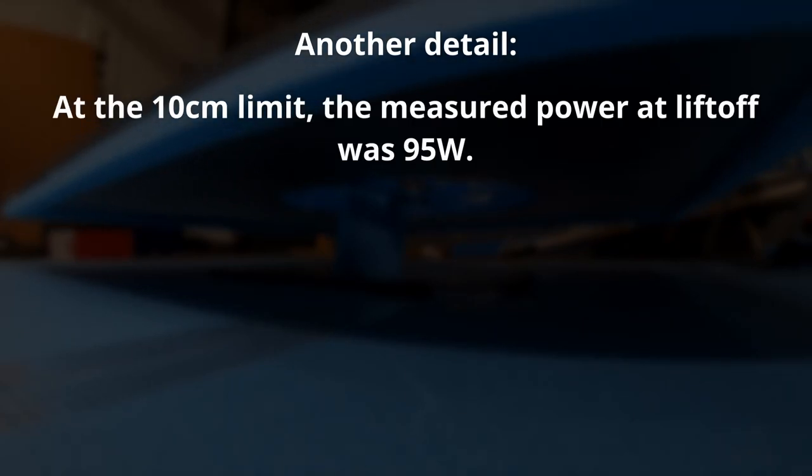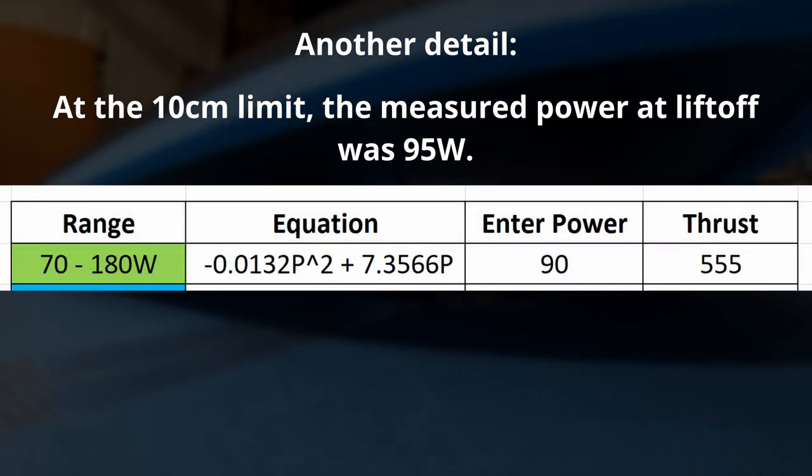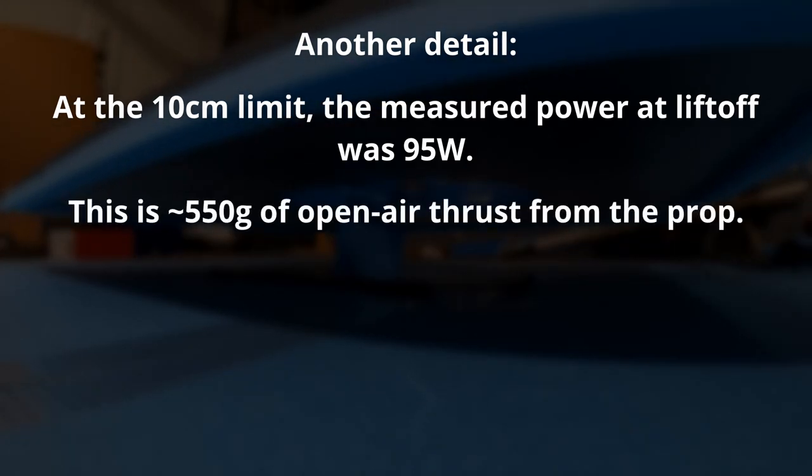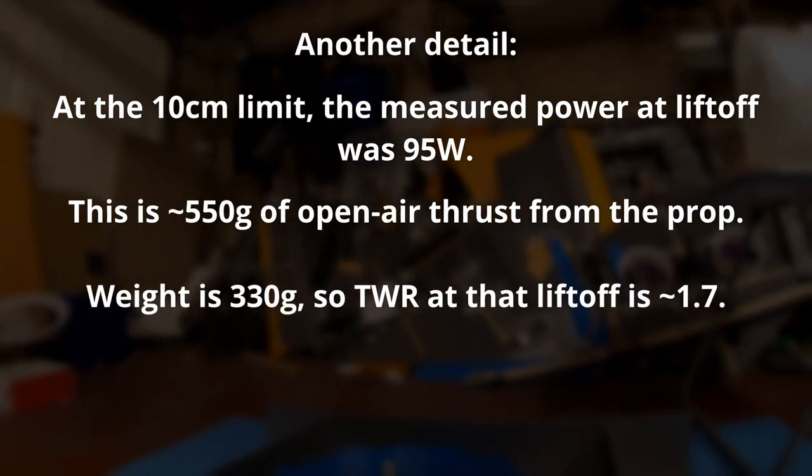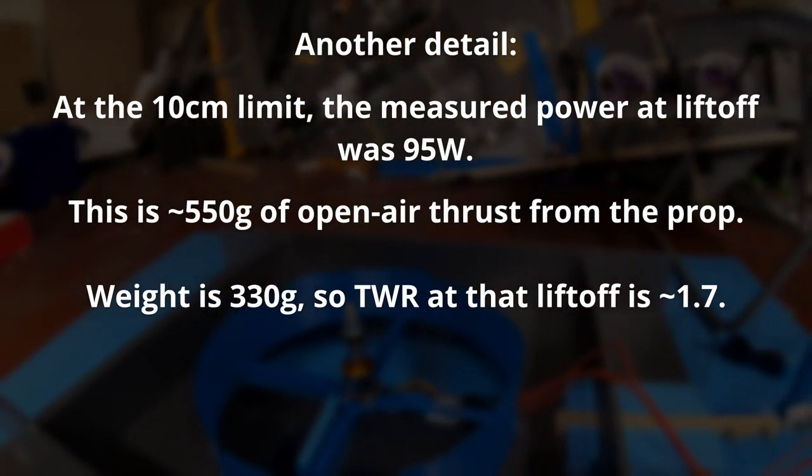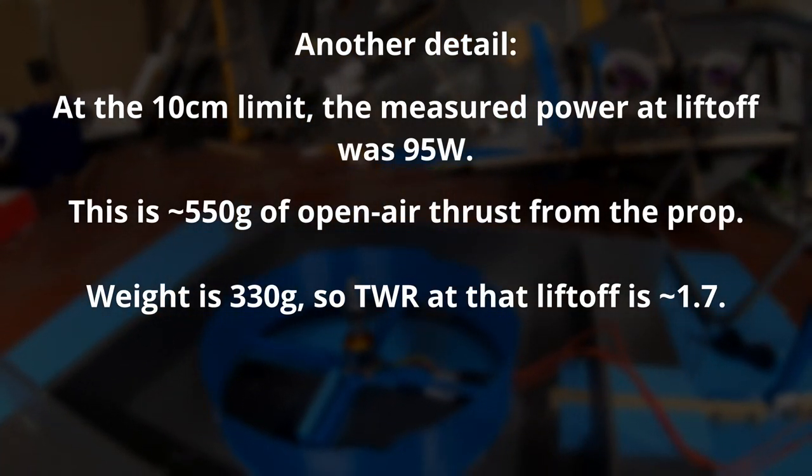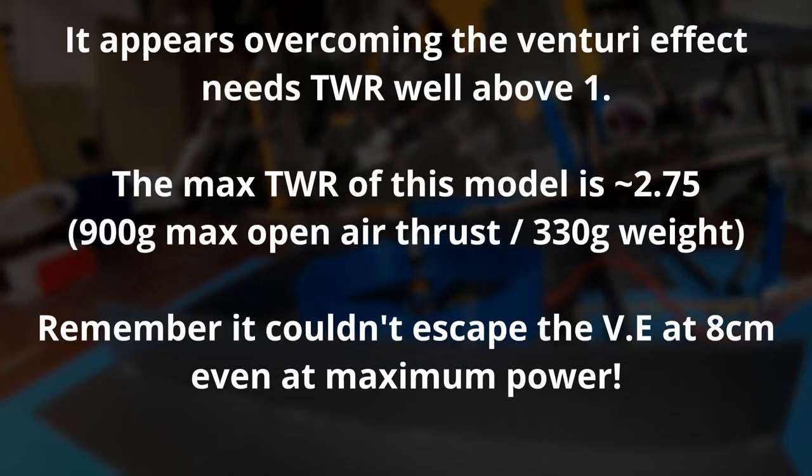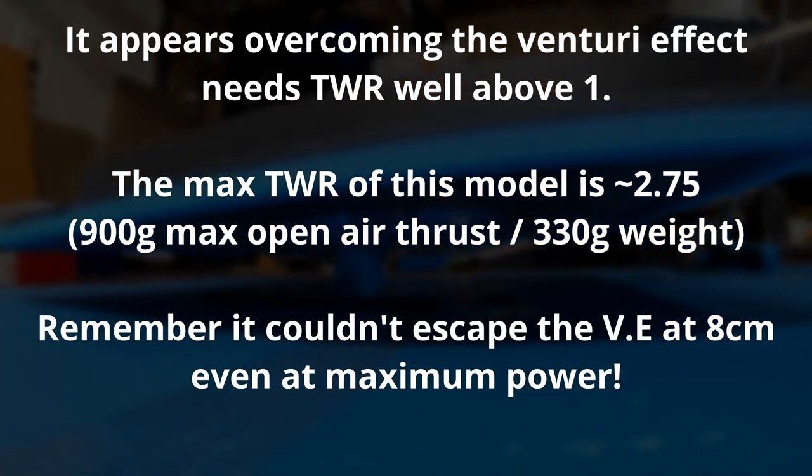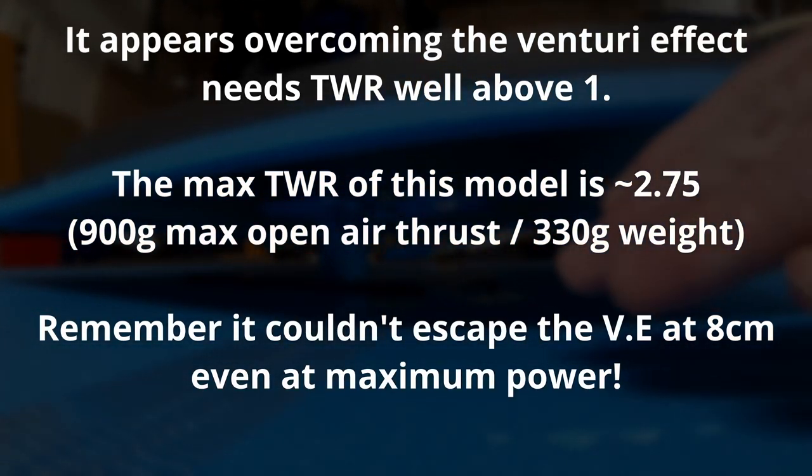A final measurement I made, which some may find interesting. When it escaped from the 10 centimetre limit, the power I measured was 95 watts. If I go to my thrust function, 95 watts correlates to 555 grams of open air thrust. What is the weight of this open plenum on the pad with no extra ballast? 330 grams. That means it needed a thrust to weight of 1.7 to escape that 10 centimetre height. The maximum thrust to weight with no extra ballast was near enough 3.